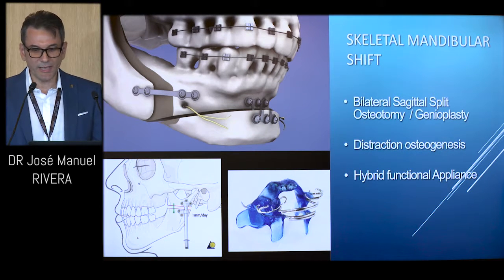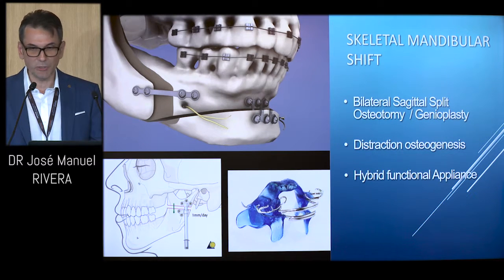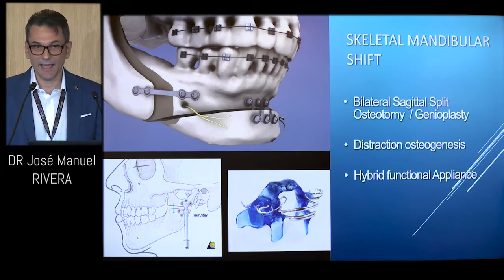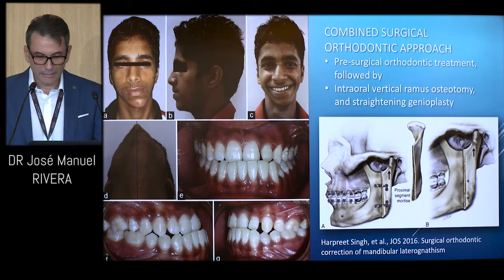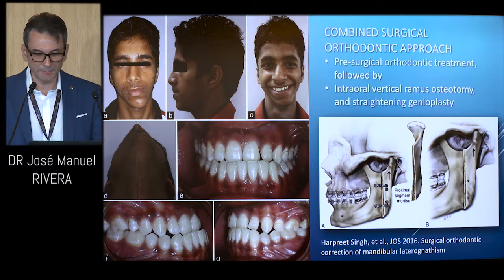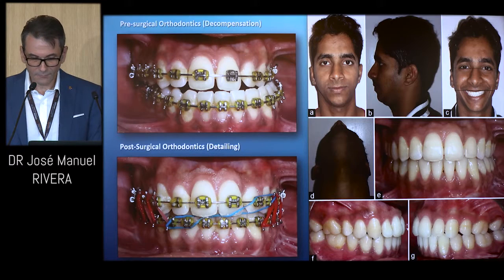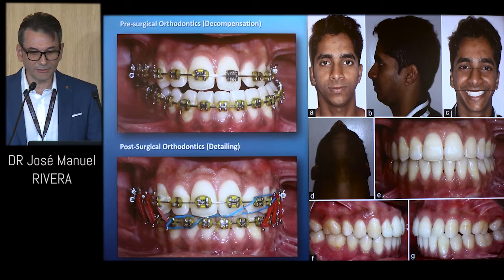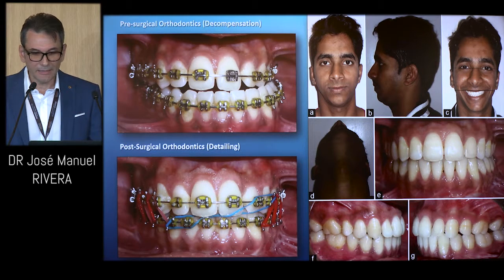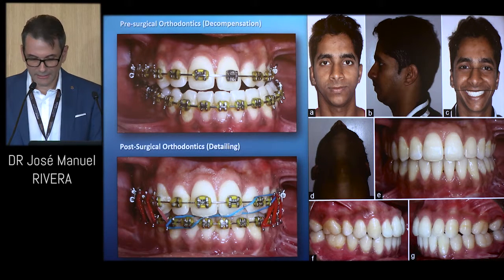For skeletal mandibular shift, we have the following treatment options: bilateral sagittal split osteotomy, genioplasty, distraction osteogenesis, and hybrid functional appliances. This case shows us a combination of surgery and orthodontic treatment to correct the MLD problem — pre-surgical orthodontic treatment followed by intraoral vertical ramus osteotomy and straightening genioplasty. Post-surgical orthodontic treatment using elastics was used to detail the occlusion, and there is marked improvement of facial asymmetry after treatment.